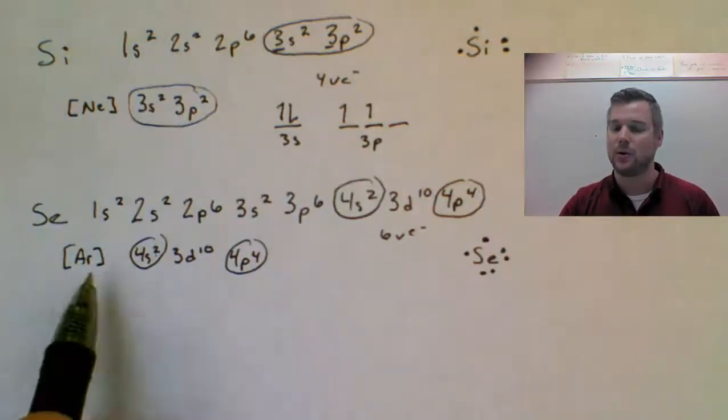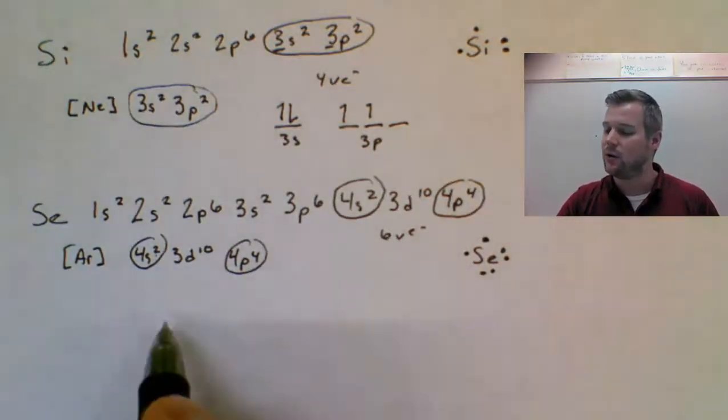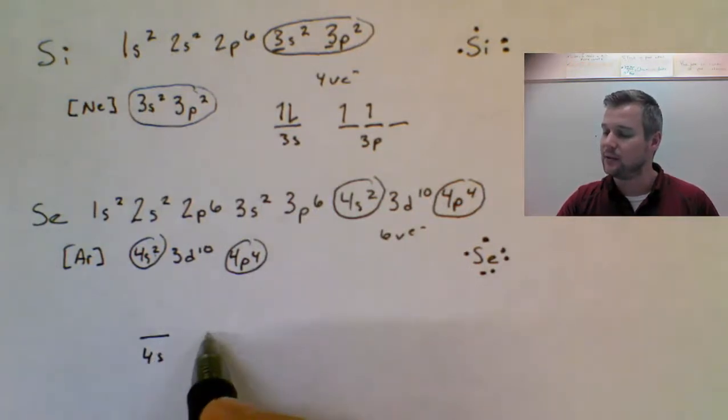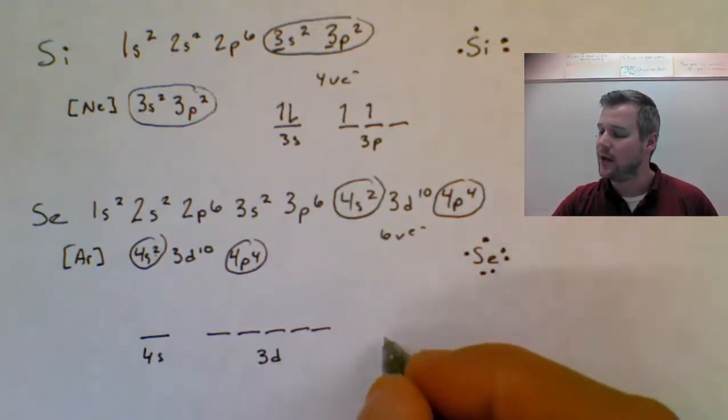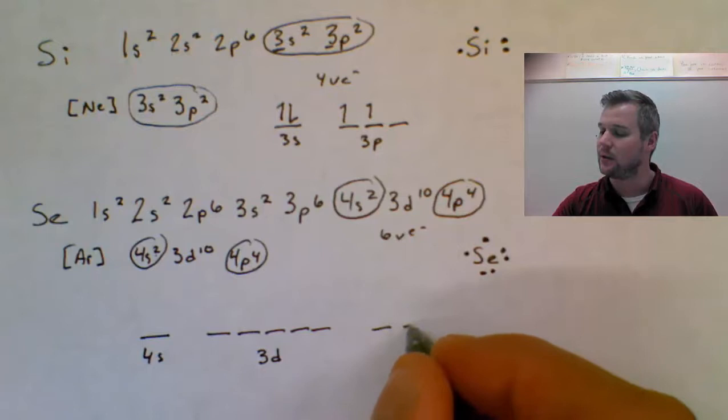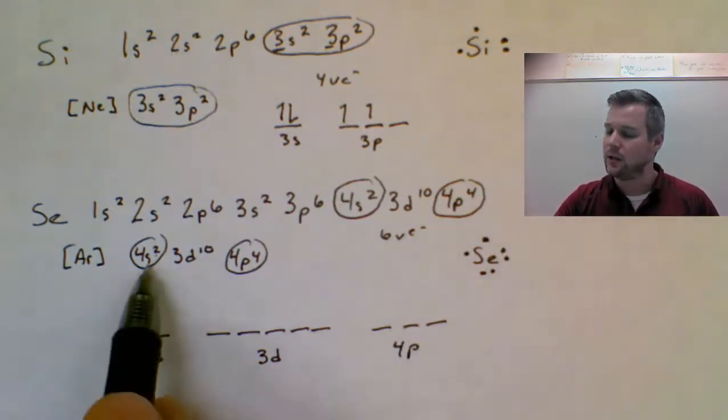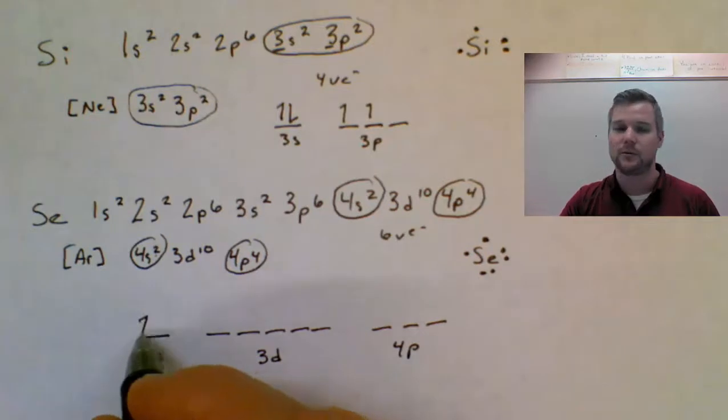For selenium, since we're drawing post-noble gas, I need to draw one line for 4S. 3D is going to have five lines. 10 divided by 2 is 5, and P will have three lines, because 6 divided by 2 equals 3. 4S2, here's my up arrow, down arrow, Pauli exclusion principle.